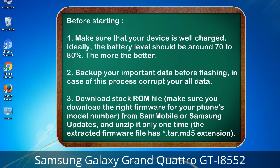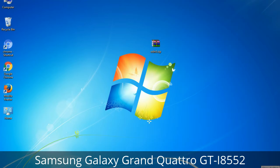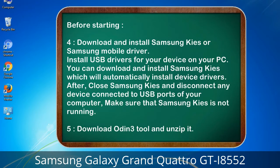3. Download the stock ROM file. Make sure you download the right firmware for your phone's model number. From Sammobile or Samsung Updates, and unzip it only one time — the extracted firmware file has a *.tar.md5 extension. 4. Download and install Samsung KIES or Samsung mobile driver to install USB drivers for your device on your PC. Samsung KIES will automatically install device drivers. After, close Samsung KIES and disconnect any device connected to USB ports of your computer. Make sure Samsung KIES is not running.